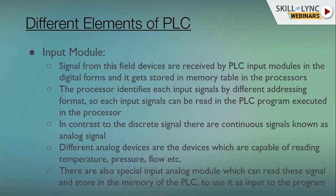There are also continuous signals from input field devices — such as temperature, pressure, vacuum, flow, and level — which are received as analog signals. We have different analog input modules that receive continuous signals in the form of current or voltage.